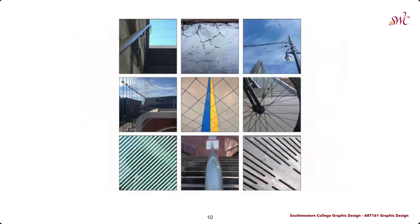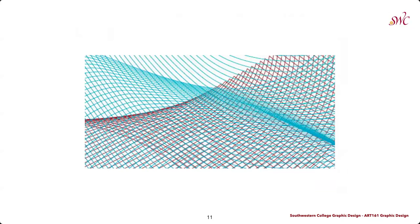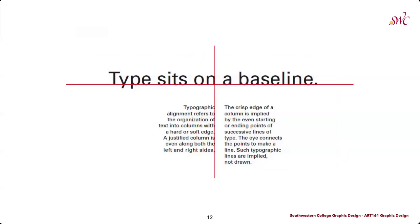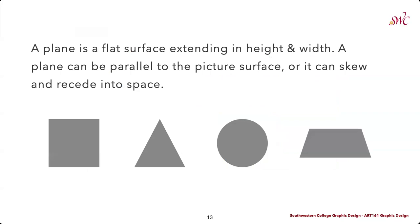Lines can be found in everyday life, whether it be bike spokes, cracks in the sidewalk, or cable lines. We can also start to depict space and form within the overlapping of lines and the way that they are shaped. When we think about typography, we use lines to identify alignment through baselines of text or different vertical guidelines to help us align different elements within text.